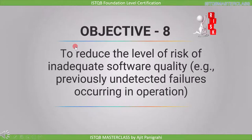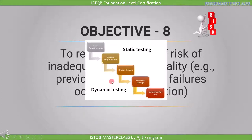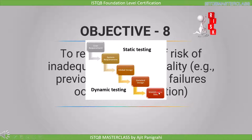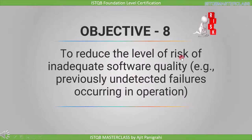The eighth objective is to reduce the level of risk of inadequate software quality — that is, previously undetected failures occurring in operation. This objective is related to the fifth and sixth objectives. We need to find defects in the same stage in which they are introduced; otherwise they will be found during operation. If a fault is found during operation it can have adverse effects, and that is why it is necessary to reduce the level of risk of inadequate software quality.